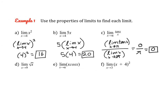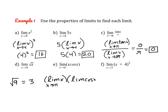For part D, this is just going to be direct substitution. This is a radical function, so we can directly substitute 9 and we get 3, as long as we're not substituting a negative number. For part E, we have a product of two different functions, so we can find their limits separately: the limit of x as x approaches pi, multiplied by the limit of cosine of x as x approaches pi. The limit of x as x approaches pi is pi, and the limit of cosine of x as x approaches pi is negative 1. So our overall limit is negative pi.